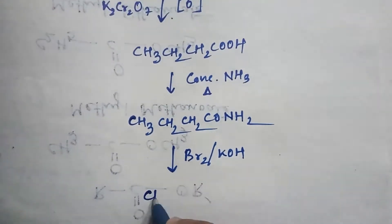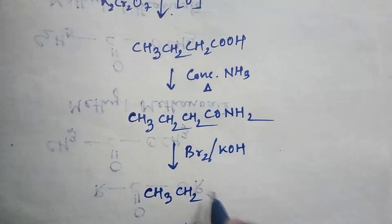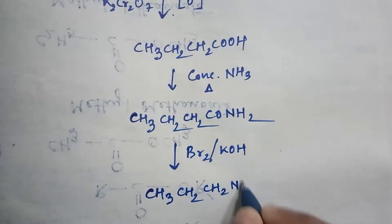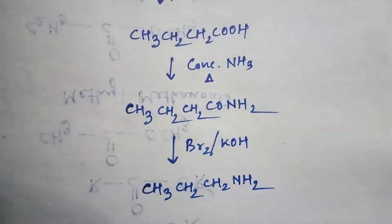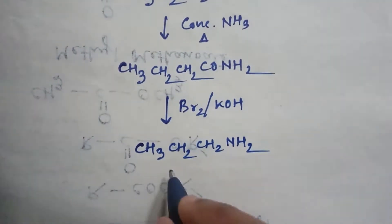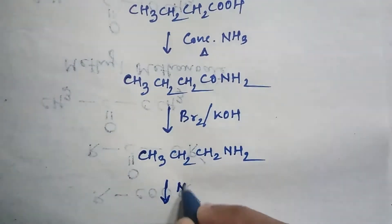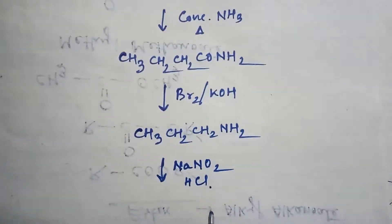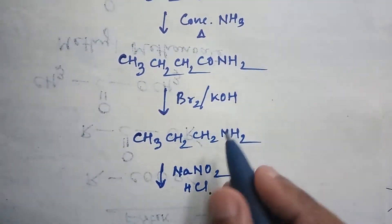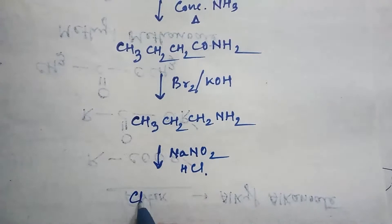Here the product is CH3-CH2-CH2-NH2, that is propylamine. Now if you add sodium nitrite and HCl, then this amino group will convert into alcohol.